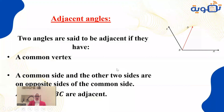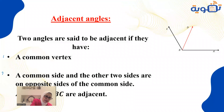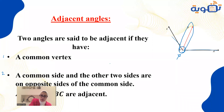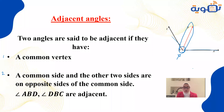Now let's talk about adjacent angles. Two angles are adjacent if they have a common side and a common vertex. The outside side does not belong to — or is opposite to — the common side.